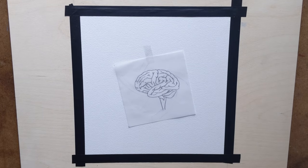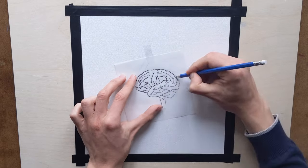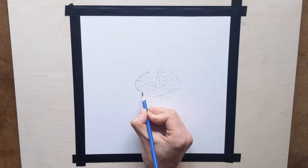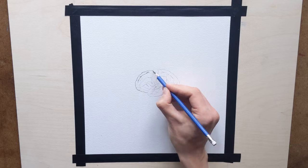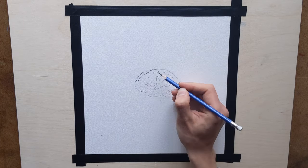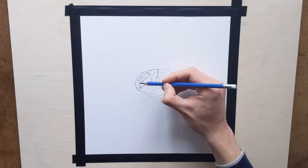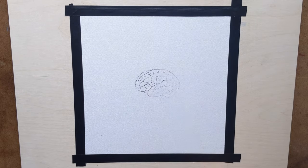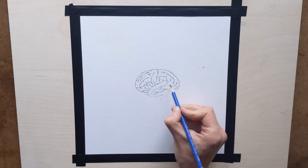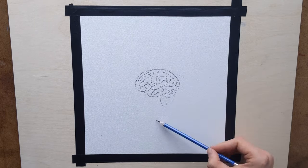To begin, I transfer a drawing of a brain that I did separately using anatomical pictures onto my watercolor paper using tracing paper. I don't want too much graphite on the watercolor paper because it could mix with the paint and make it dirty, so I'm tracing the little folds in the brain quite precisely with my graphite pencil.